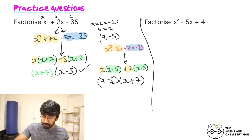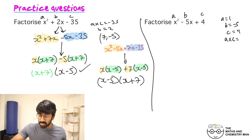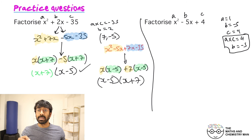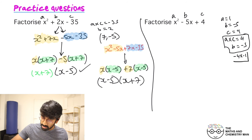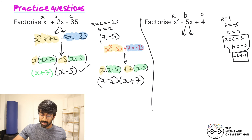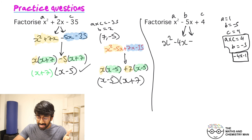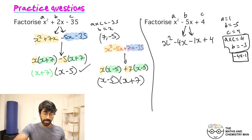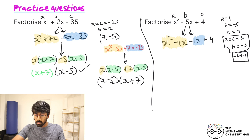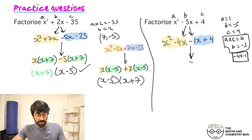Second practice problem: a is 1, b is minus 5, c is positive 4. a times c gives 4, and b is minus 5. We need numbers that multiply to 4 and add to minus 5 — that's minus 4 and minus 1. Use those to split minus 5x: x squared, minus 4x, minus 1x, plus 4.